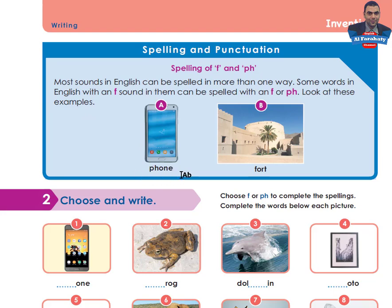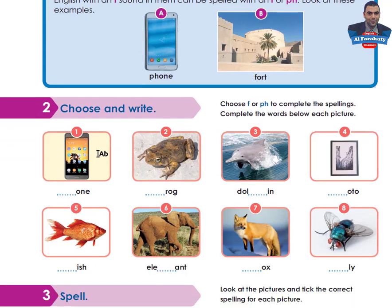Look at these examples: 'phone' and 'fourth.' Both have an F sound but are spelled differently. Activity 2 — Choose and Write: choose F or PH to complete the spellings and complete the words below each picture.